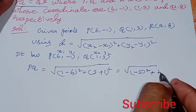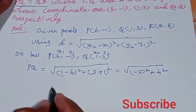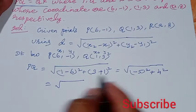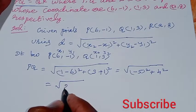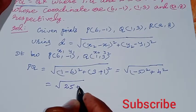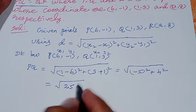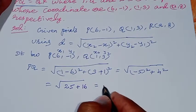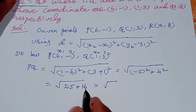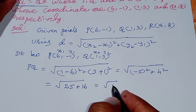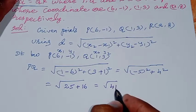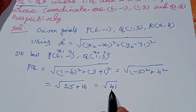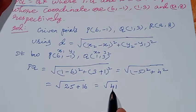3 plus 1 equals 4. So PQ equals square root of (-5) whole square plus 4 whole square, which is square root of 25 plus 16, equals square root of 41. So the distance between PQ is square root of 41.